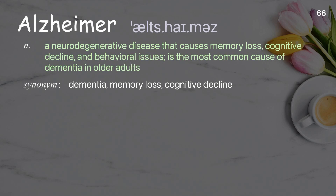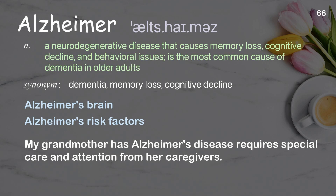Alzheimer's: A neurodegenerative disease that causes memory loss, cognitive decline, and behavioral issues; the most common cause of dementia in older adults. Examples: Alzheimer's brain, Alzheimer's risk factors. My grandmother has Alzheimer's disease, requiring special care and attention from her caregivers.